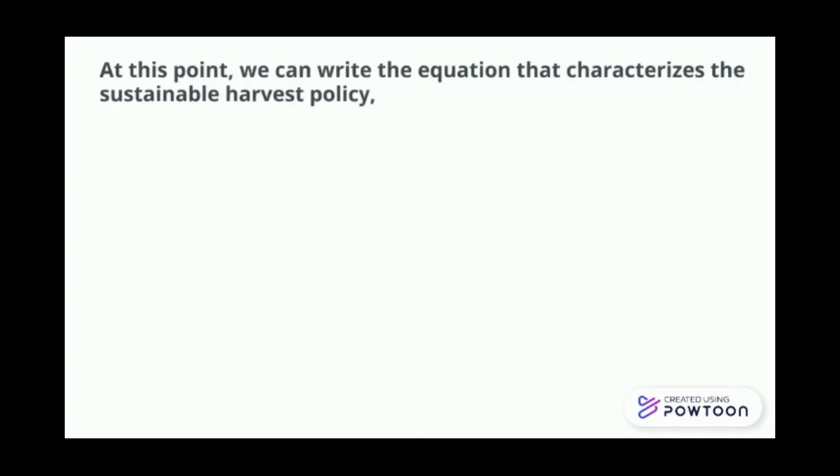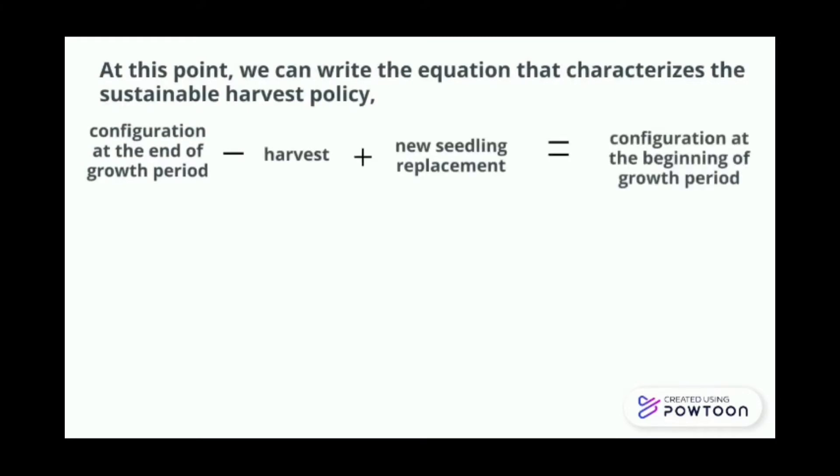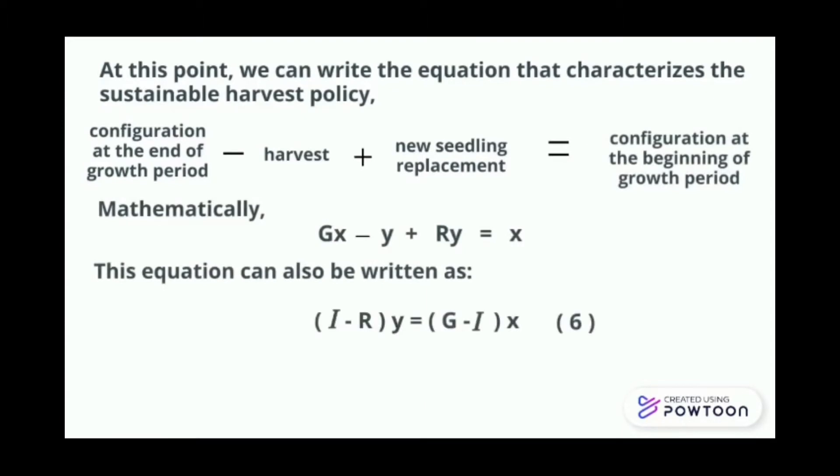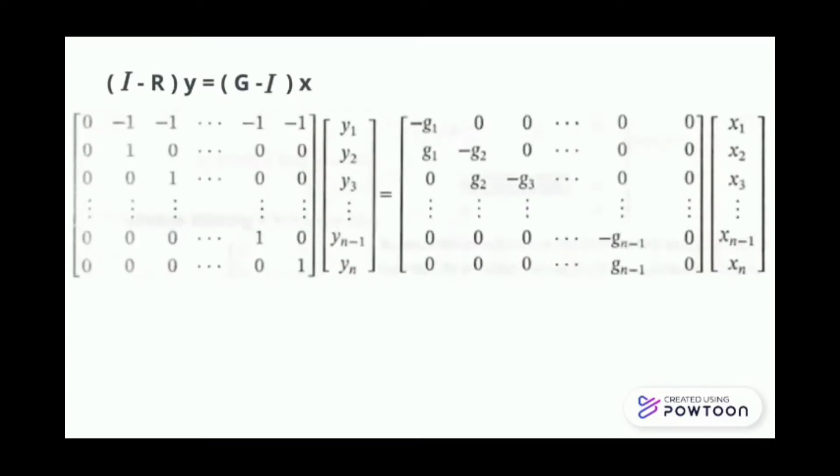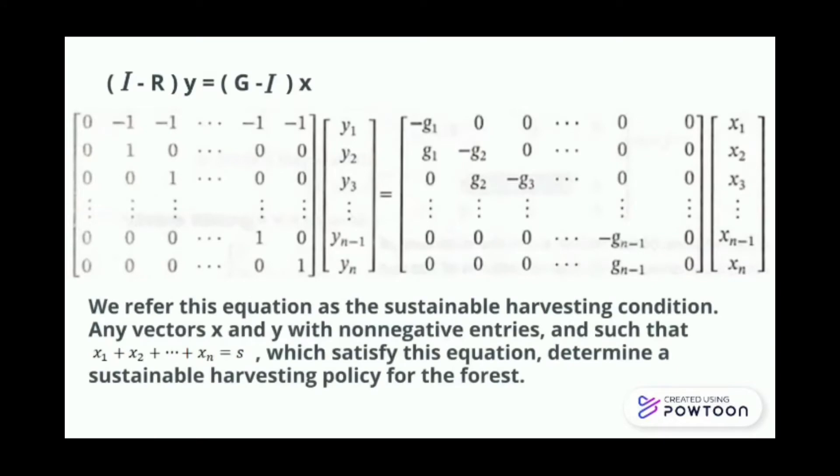At this point, we can write the equation that characterizes the sustainable harvest policy: configuration at the end of growth period, minus harvest, plus new seedling replacement, equal to the configuration at the beginning of growth period. Mathematically, Gx minus y plus Ry equal to x. This equation can also be written as (I minus R)y equal to (G minus I)x. We refer this equation as the sustainable harvesting condition. Any vectors x and y with non-negative entries, and such that x1 plus x2 until xn equals to s, which satisfy this equation, determine a sustainable harvesting policy for the forest.